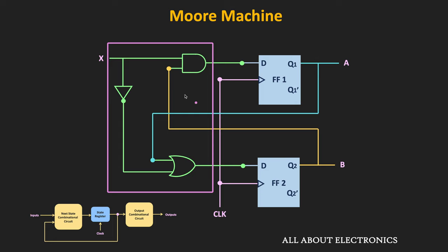Based on this input X, the logic gates will generate the two inputs for these D flip-flops, and based on these two inputs the next state of the flip-flops will get decided. The output of these two flip-flops represents the present state of the memory element. As you can see, the output of these two flip-flops is going back to the logic circuit, meaning the input to this combinational block is the external input X as well as the present state of the memory element. In this case we do not have any output combinational block, so the output of these two flip-flops represents the output of the circuit.